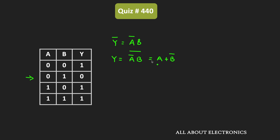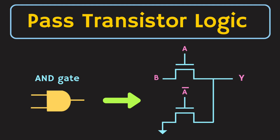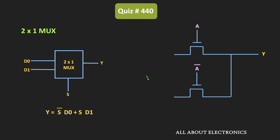Now, to get this function, let us find the values of inputs x1, x2, and x3. On a recent video on the main channel, we have already seen how to implement any logic function with the help of pass transistor logic. In that video, we saw that using a multiplexer it is possible to implement any boolean function. So first, we will implement this function using a multiplexer, and then implement this multiplexer circuit in the form of pass transistor logic.